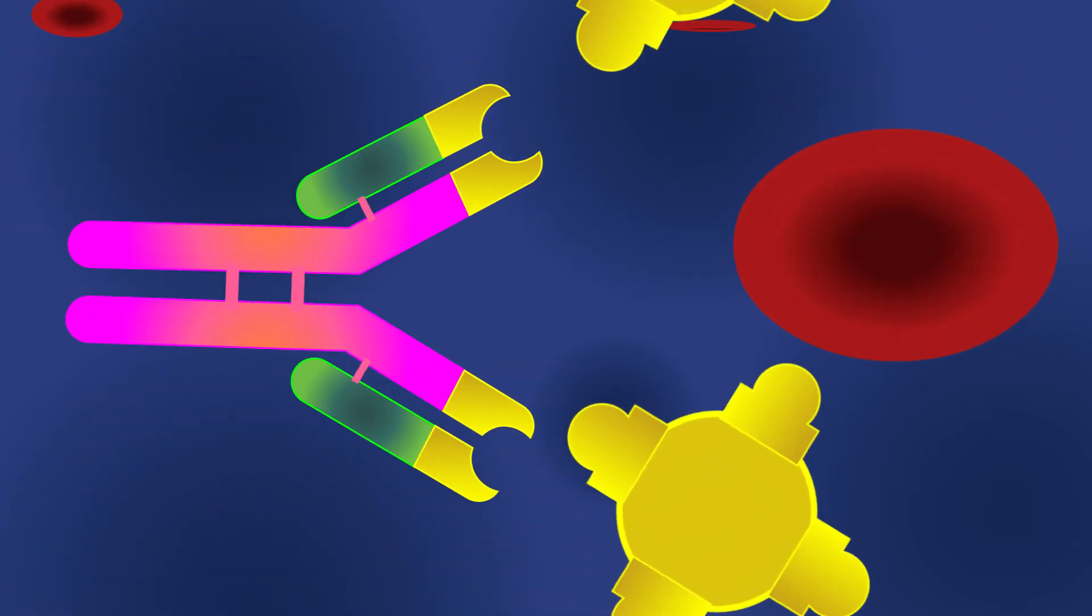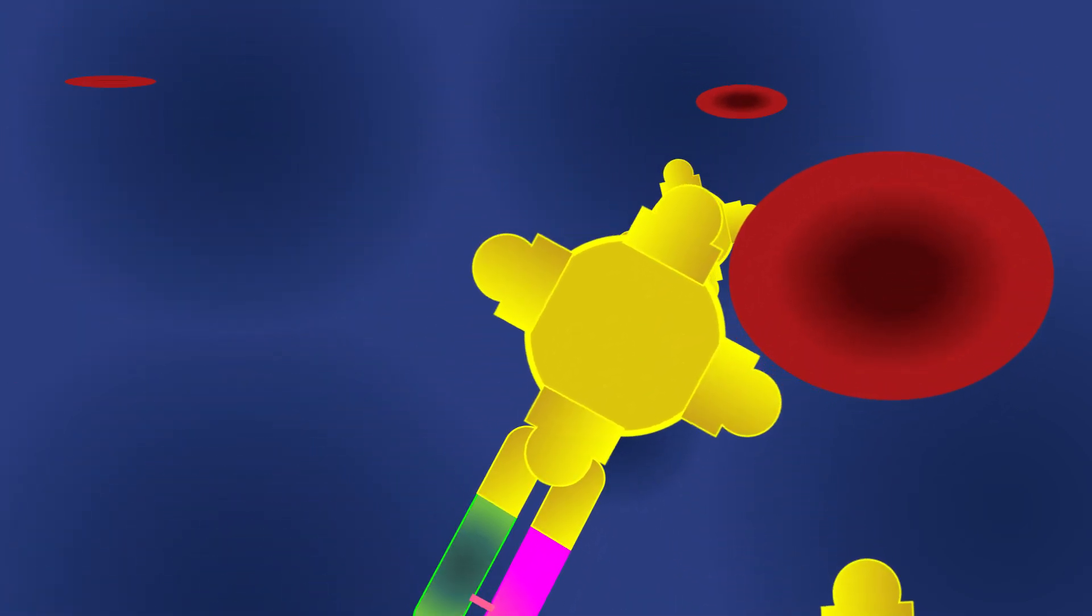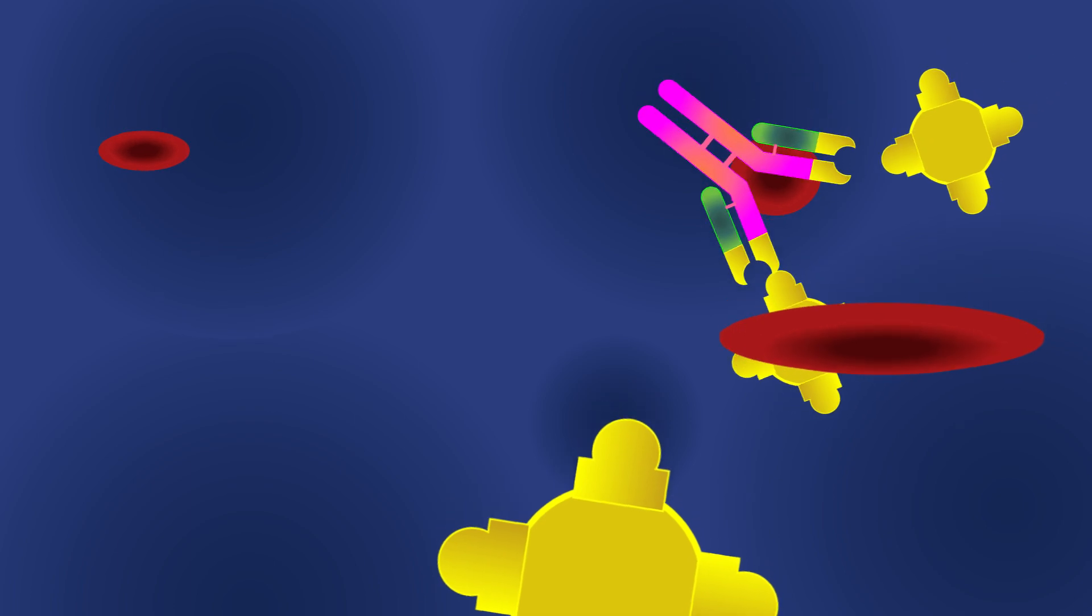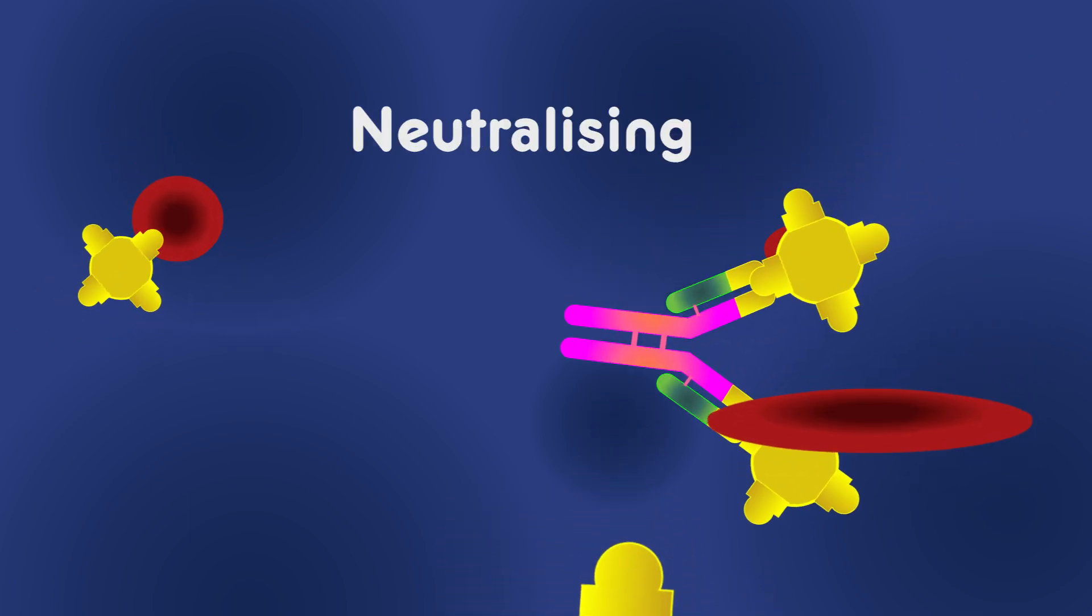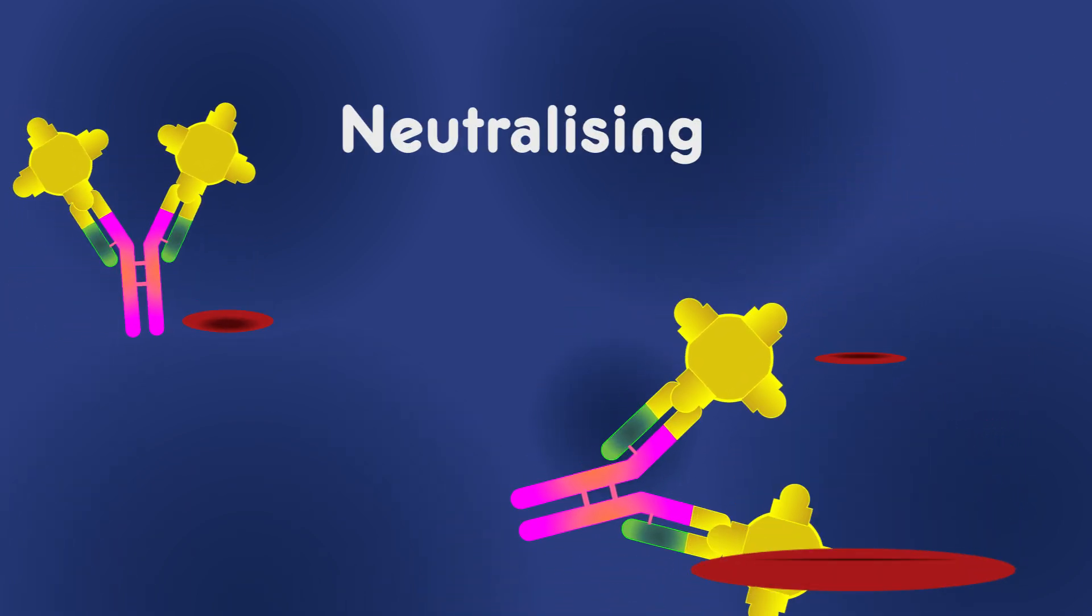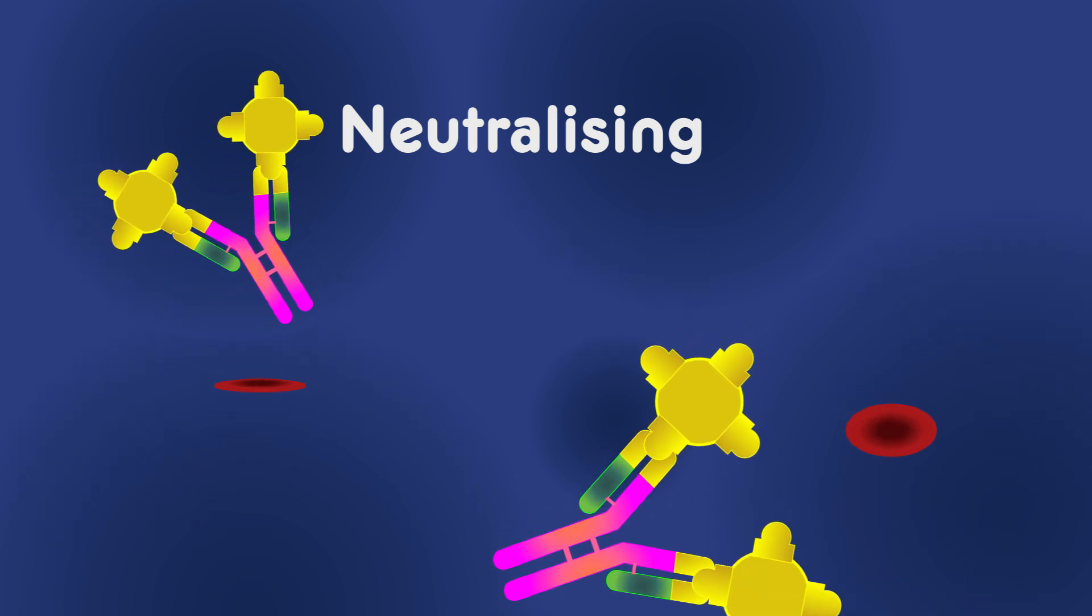By binding an antigen, an antibody can stop the antigen from entering or damaging cells. This is known as neutralizing. The antibody can also tag the antigen for attack by other parts of the immune system.